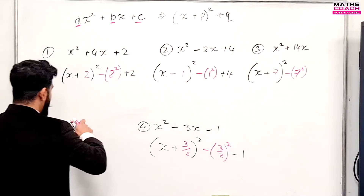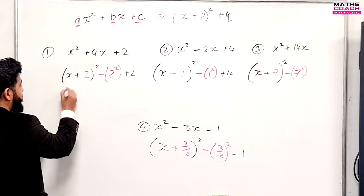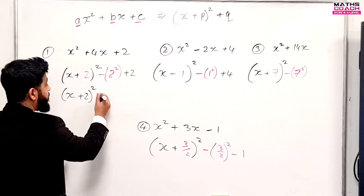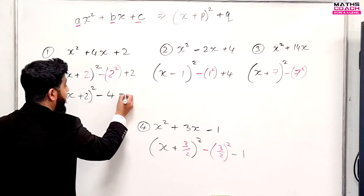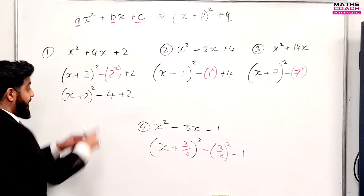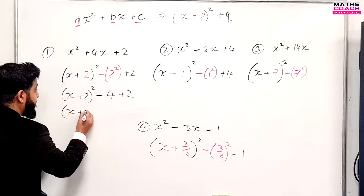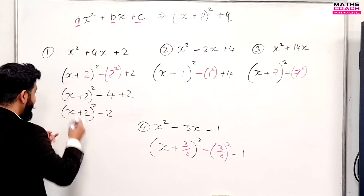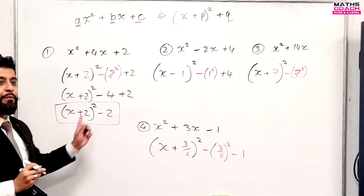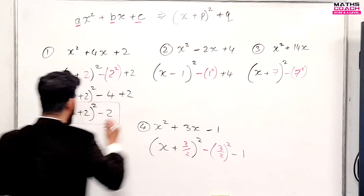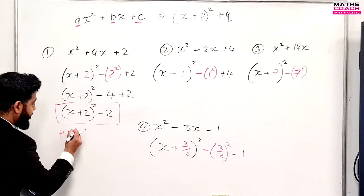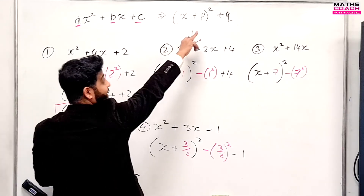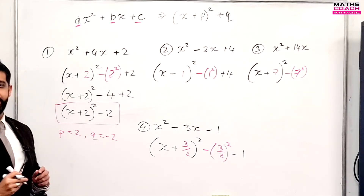Now all you have to do is simplify to get your final answer. For the first: we have X plus two squared, and two squared is four, so it becomes minus four. Plus the existing plus two gives minus four plus two, which is minus two. So the result is X plus two squared minus two. Your value for P is two and your value for Q is minus two.